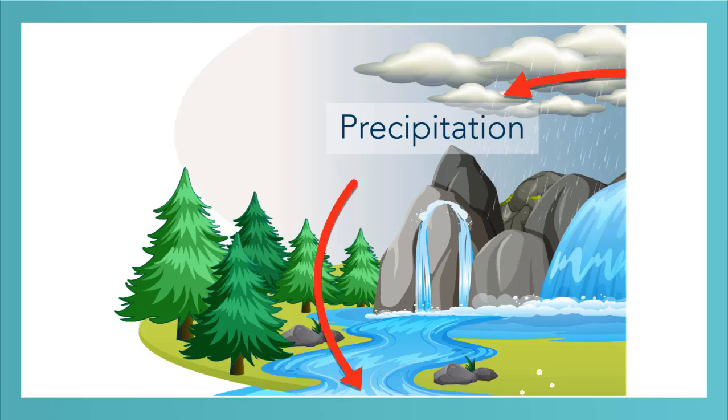The next stage in the water cycle is precipitation. Precipitation can be rain, snow, or hail falling from clouds.